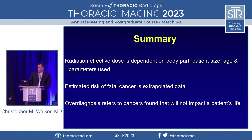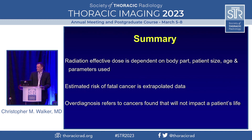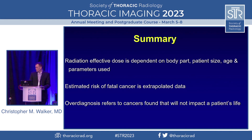In summary, the effective radiation dose is dependent on many different factors: what body part is imaged, the size of the patient, how old the patient is, and the parameters used during the scan. The estimated risk of fatal cancer from ionizing radiation related to imaging is extrapolated data from atomic bomb survivors. And finally, remember over-diagnosis refers to cancers that are found that would have never impacted a patient's life. Thank you.